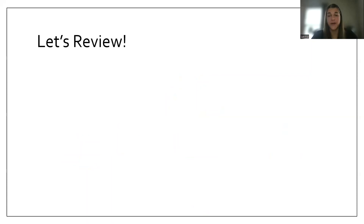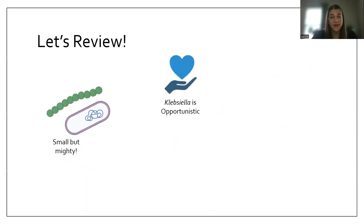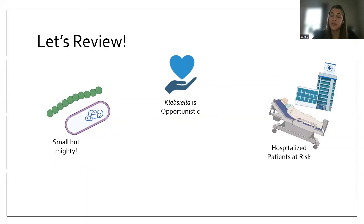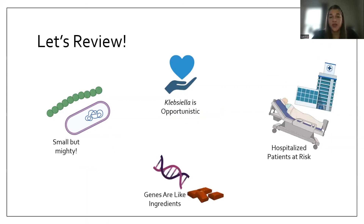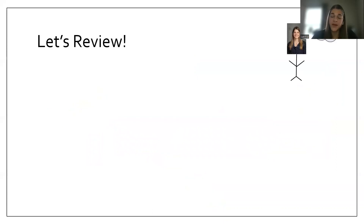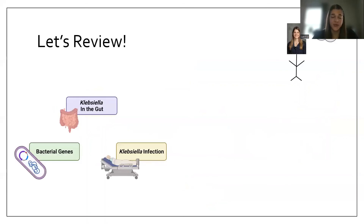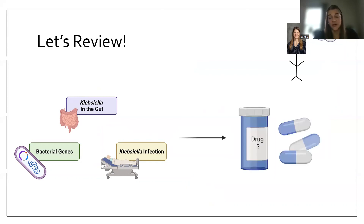Let's review what we've covered. Bacteria are small but mighty. Klebsiella is considered opportunistic in that it causes infections in patients who are sick, especially hospitalized patients. Klebsiella has genes which are like ingredients — some essential, some not essential — and some of these non-essential genes might make Klebsiella more dangerous. Ultimately, I'm going to connect these three ideas — bacterial genes, level of Klebsiella in the gut, and Klebsiella infection — with the ultimate goal of using my research to help inform new treatment strategies for Klebsiella.